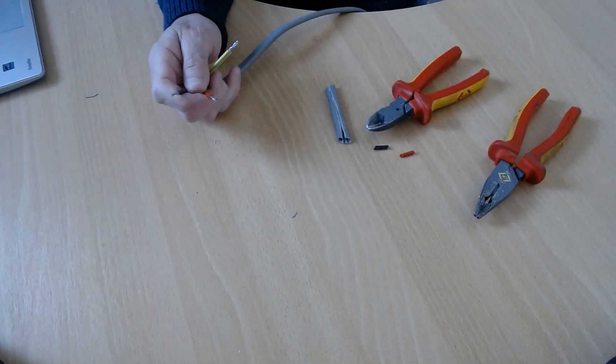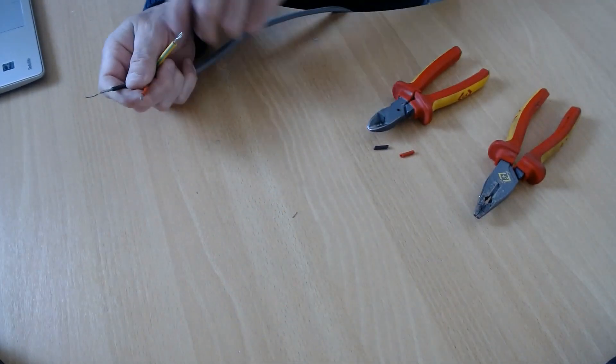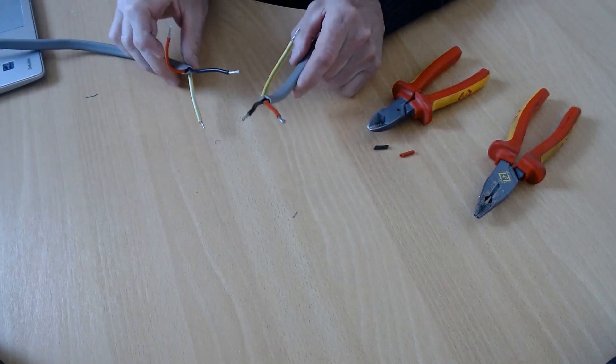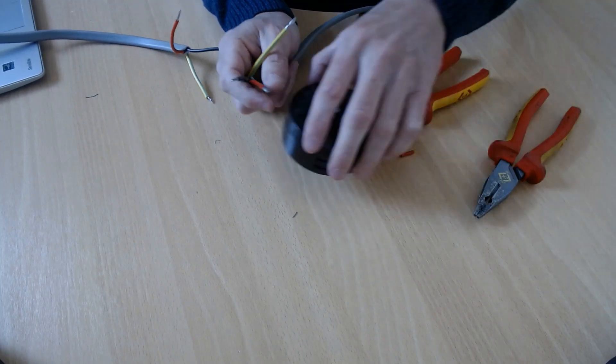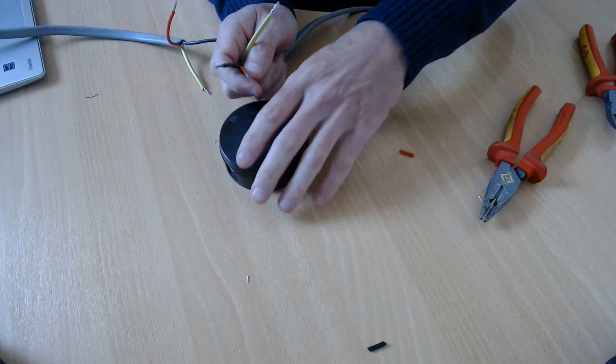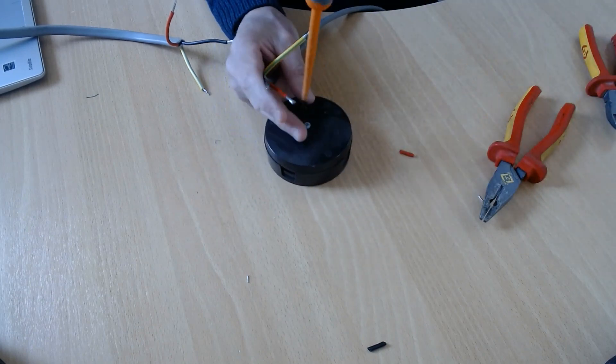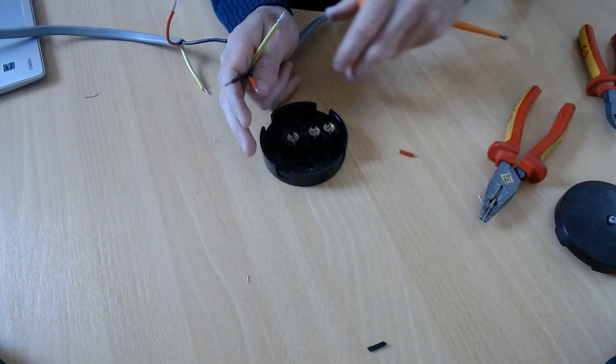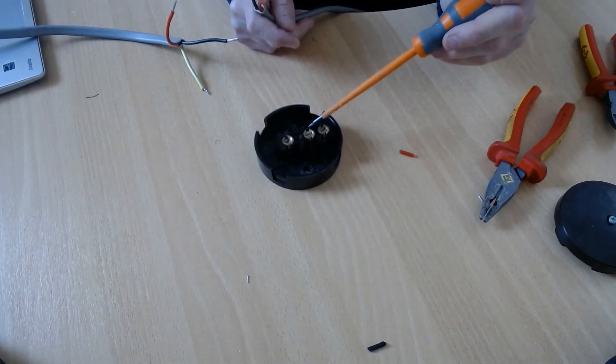Now you've got the two ends ready. Next you get your junction box. You unscrew the lid. I've already unscrewed my lid, but unscrew the lid. You get the three terminals.